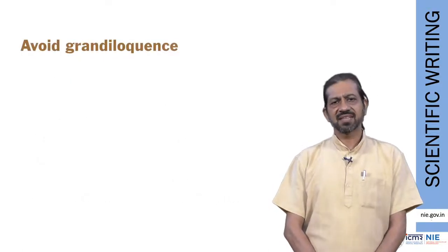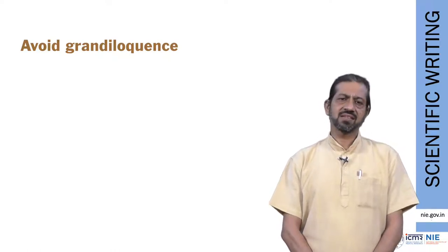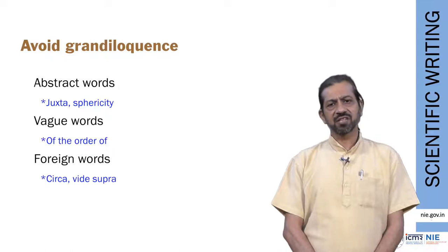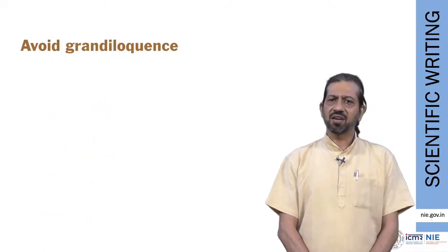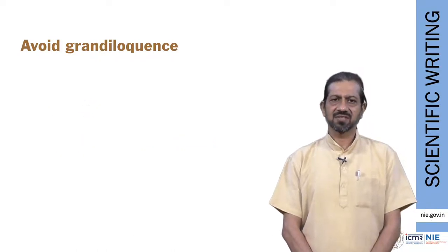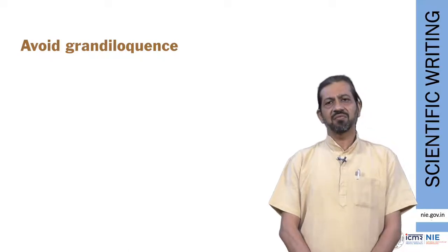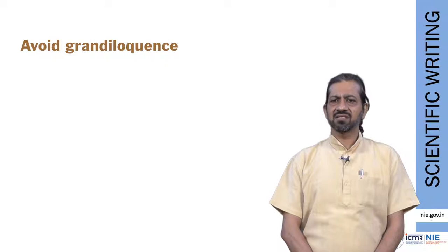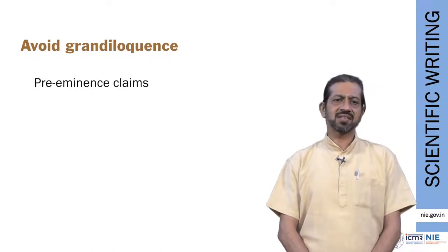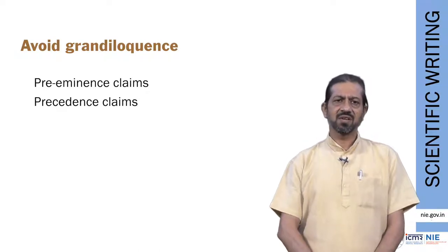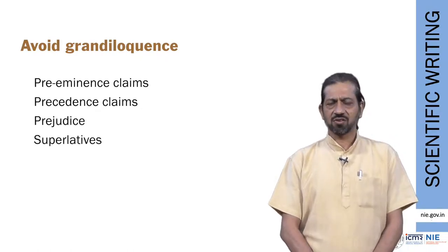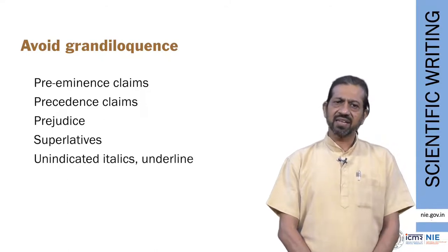We would also want to avoid a sense of grandiloquence when writing scientific manuscripts. Use of abstract, vague, or foreign words, fancy or offbeat words should be avoided. Avoid grandstanding such as saying 'this is the first study of its kind.' Claims of precedence, words suggesting prejudice, superlatives like 'great' or 'awesome,' and underlining words also need to be avoided.